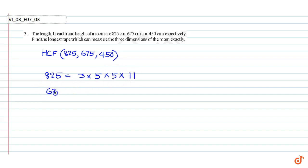675 is equal to 3 into 5 into 5 into 5 into 3 into 3.